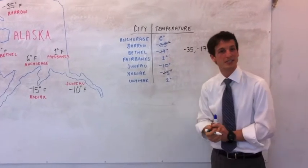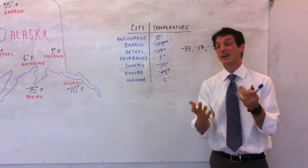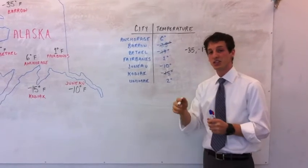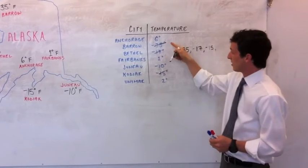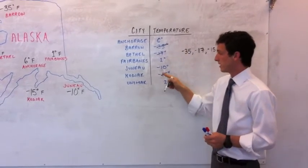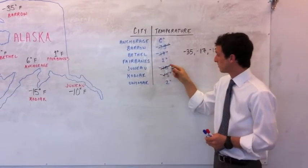I'm going to cross it off the list because we've already used it. And I would think that you would want to use this strategy of crossing numbers off the list after you've used them as well. Now our last negative number is Juneau. Negative 10.